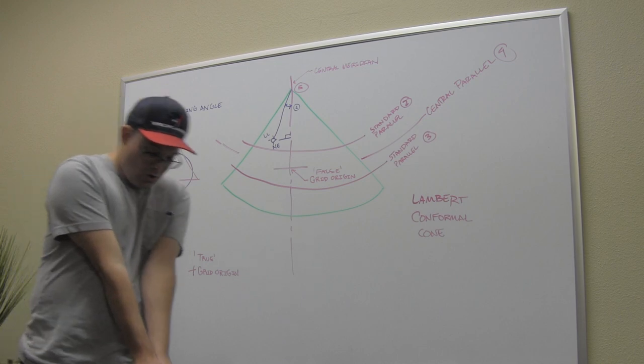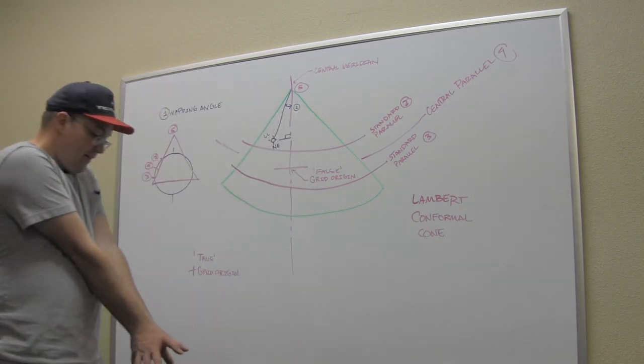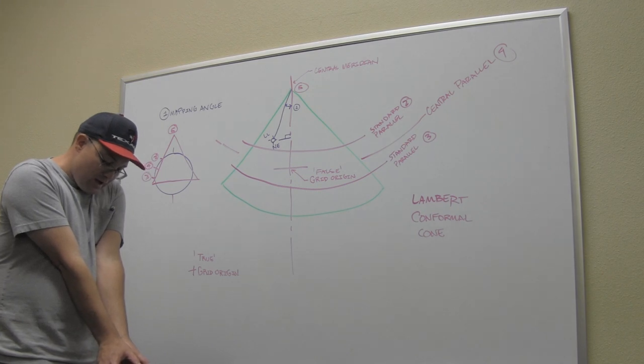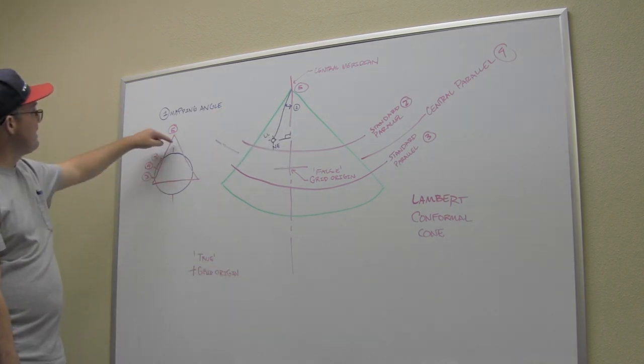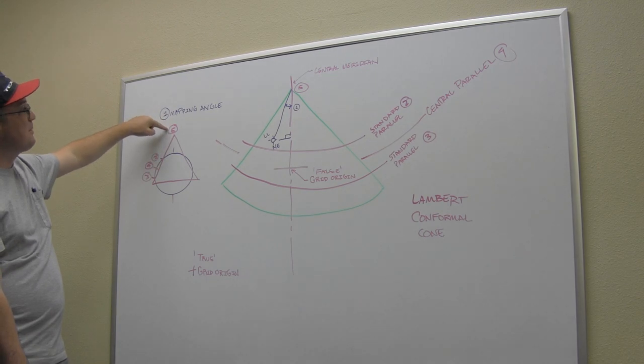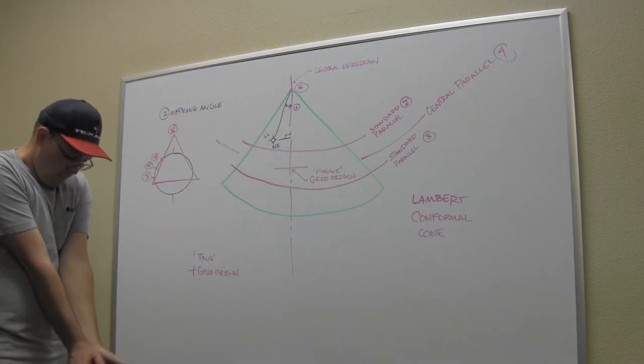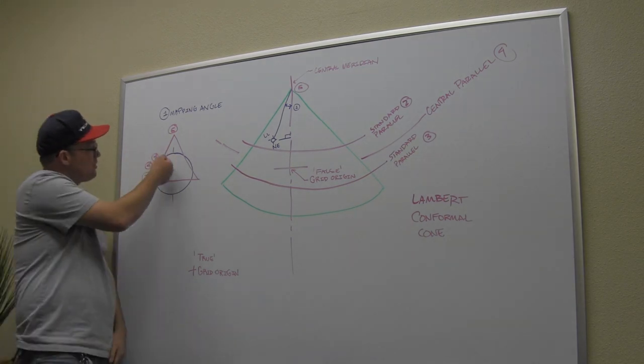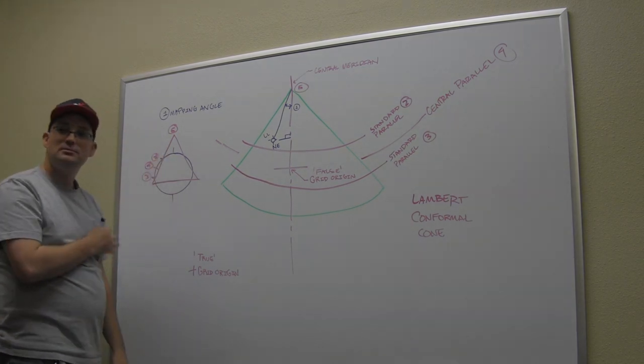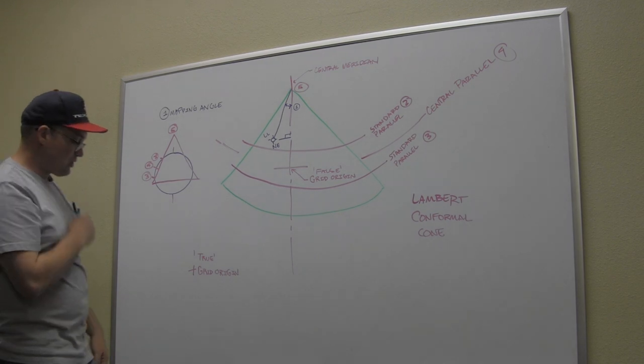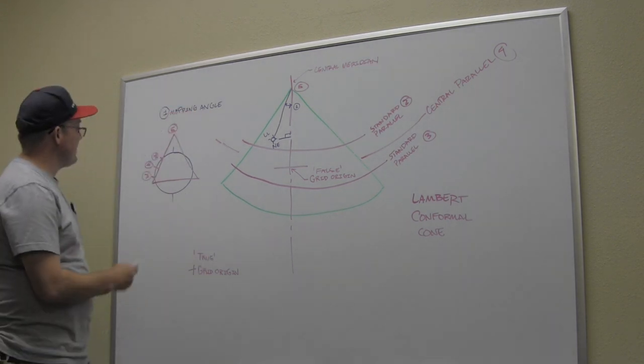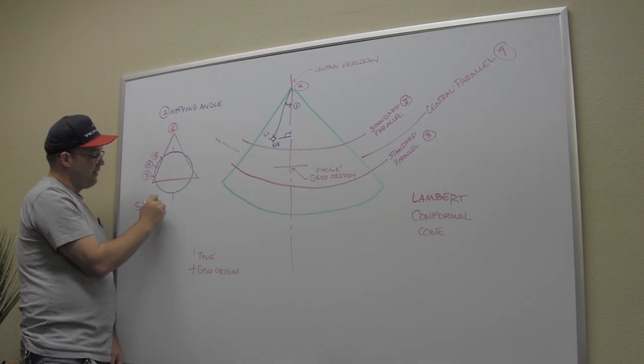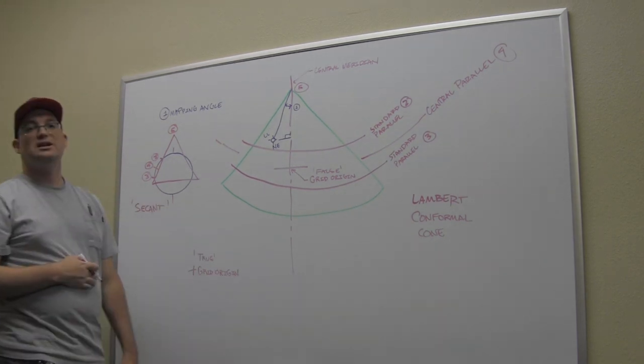What they do is they take this cone, and they put the apex of the cone, the tip, at a spot that sits above the north pole, above the axis of rotation. Then they take the cone. The cone cuts through the earth.